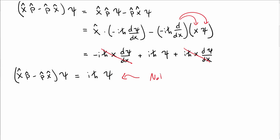Or, said another way, they don't commute. This is not zero. So x-hat and p-hat are not commuting. They're not like normal numbers in that sense.